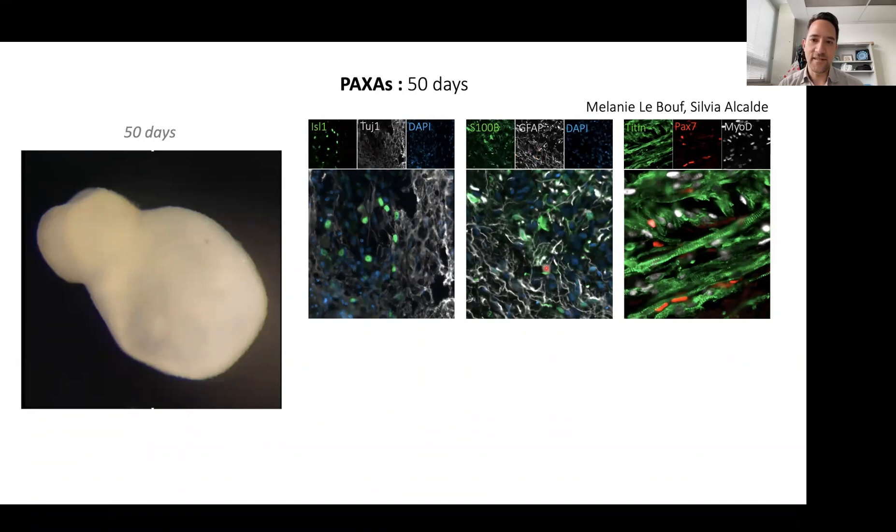We were very happy to see these three muscle markers. Titin is a protein that's involved in the contractile machinery of a myofiber. When one sees titin in this striated fashion along a fused myotube, it's a very good sign that these fibers could be functional.